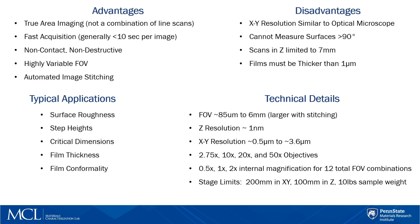The four standard objectives in our system include the 2.75, 10, 20, and 50x objectives. The NextView 3D also utilizes a variable internal magnification lens, allowing us to apply a 0.5, 1, or 2x magnification to the objective lens in use. Four objectives with three internal magnifications gives a total of 12 field of view combinations. The working dimensions of the stage are 200 mm in X and Y, 100 mm in Z, with a maximum sample weight of 10 pounds.